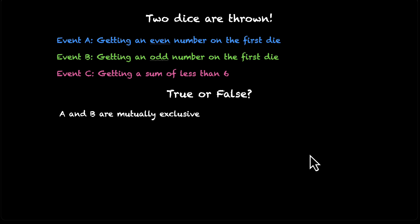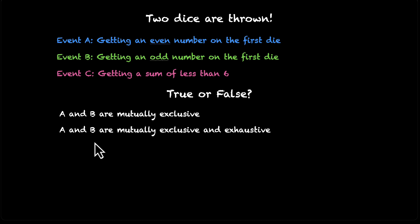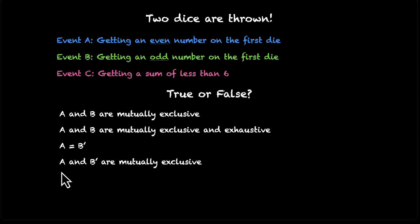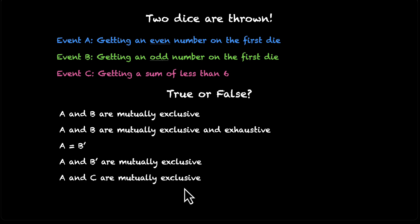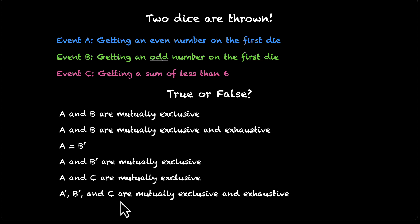Here are the statements. The first one is A and B are mutually exclusive. Then we have A and B are mutually exclusive and exhaustive. Then we have A is equal to B' (not B). Then we have A and B' are mutually exclusive. Then we have A and C are mutually exclusive. And the last one: A', B', and C are mutually exclusive and exhaustive.